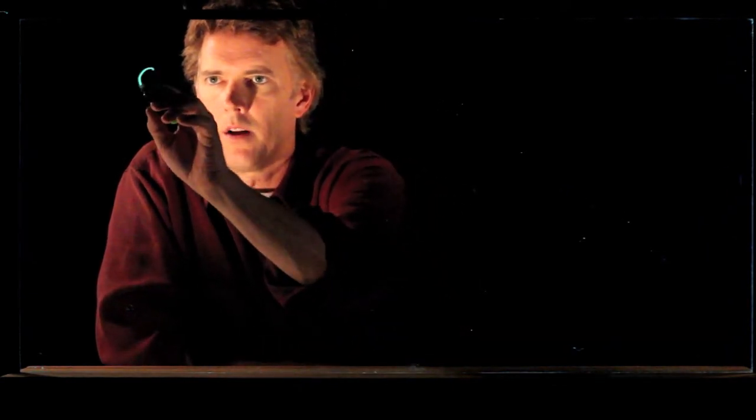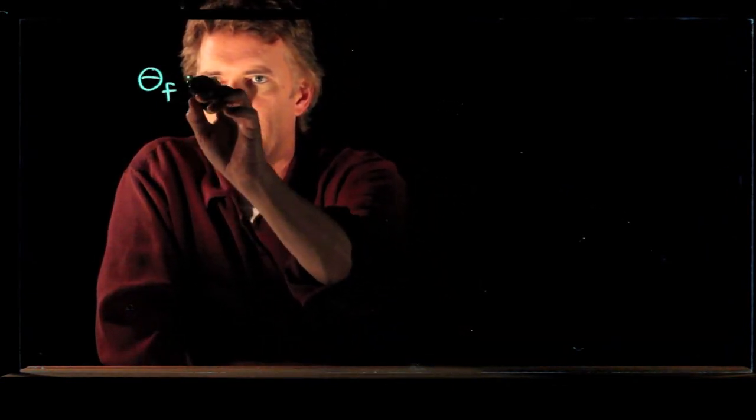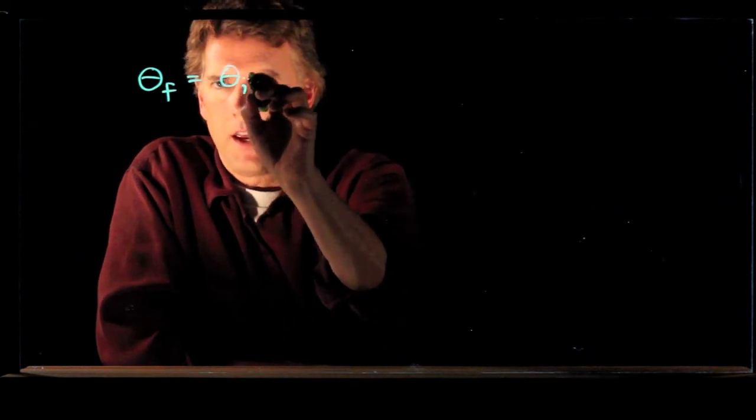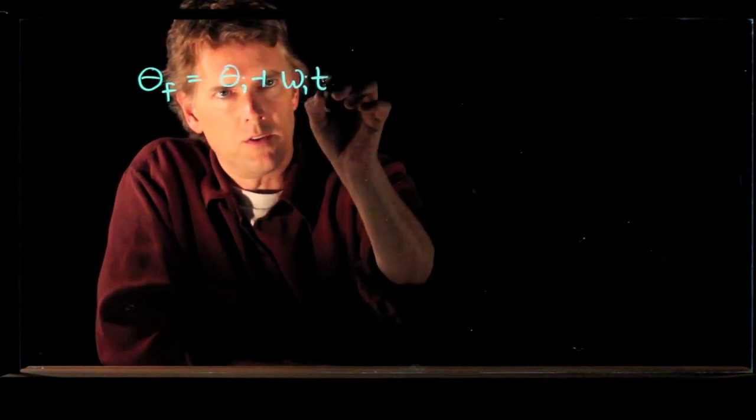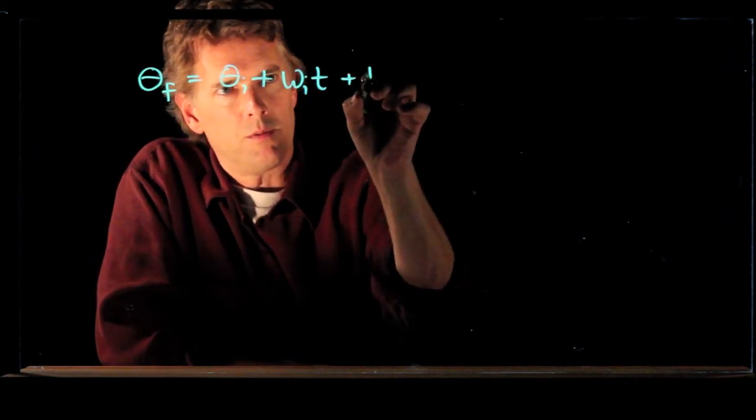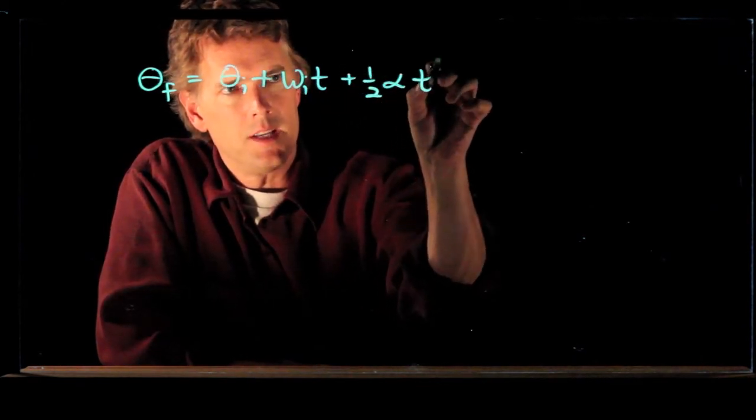So, the first kinematic equation that we wrote down was the following: theta f equals theta i plus omega initial times t plus one half alpha t squared.